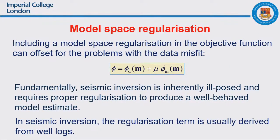Practically, we often include a model space regularization into the objective function. Instead of a single data misfit objective, we also have the model space regularization, controlled by a coefficient that balances the contribution of each term. Fundamentally, seismic inversion is ill-posed and requires proper regularization to produce a well-behaved model estimate. In seismic inversion, the regularization term is usually derived from well-logs — that is the common practice.